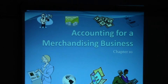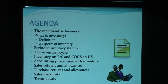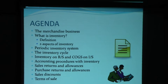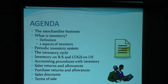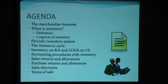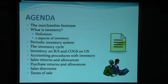The agenda for this chapter includes: the merchandise business, what is inventory, some definitions, two aspects of inventory, periodic systems, the inventory cycle, inventory on the balance sheet and the income statement, accounting procedures with inventory, sales returns, purchase returns, and discounts and terms of sale. All of this is probably brand new terminology, so we'll go over each item one by one. Please listen carefully, take notes, and review your PowerPoint notes as you go through this.